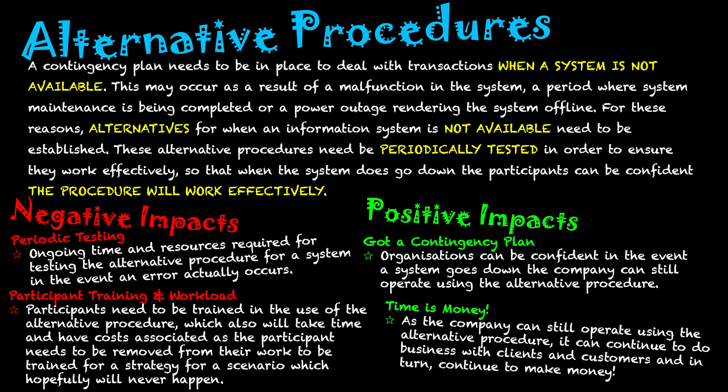As a flow on from that, time is money. When the system is down and we can't do business, that's going to cost money. But if we can continue to do business and still sell to customers and our products — even though we may be using a different type of system — we can still make money. As the company can still operate using the alternative procedure, it can continue to do business with its clients and customers and in turn continue to make money.